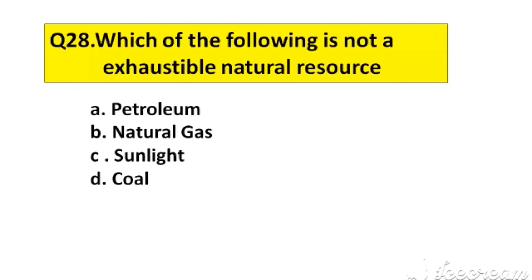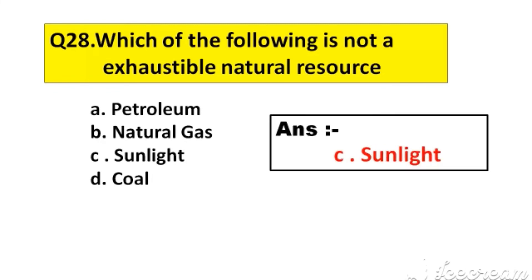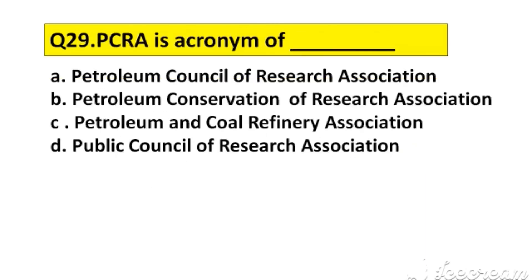Question number 28. Which of the following is not an exhaustible natural resource? Option A: Petroleum, B: Natural gas, C: Sunlight, D: Coal. The right answer is option C: Sunlight.